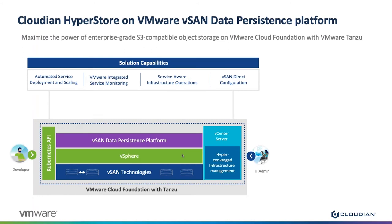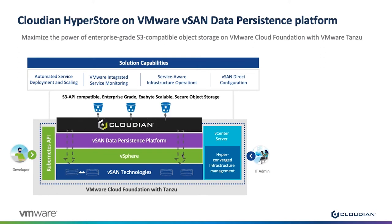This is the second of the series. For people who want to know more about the integration and individual components, please look at the link in the chat that will take you to the previous VMUG. Today is a summary. VMware has invested a lot in bringing Kubernetes workloads to vSphere, and through the vSAN data persistence platform has enabled bringing solutions like Cloudian Hyperstore into the VMware ecosystem.